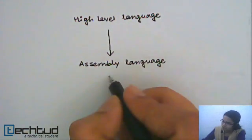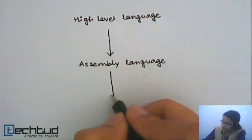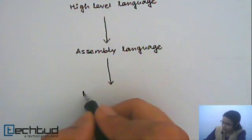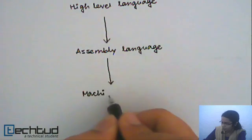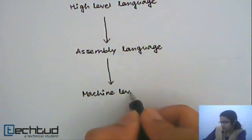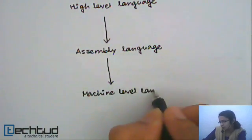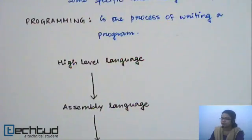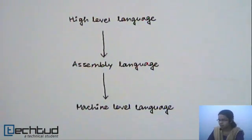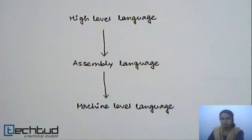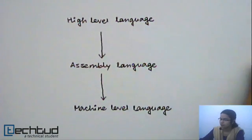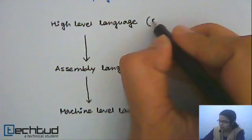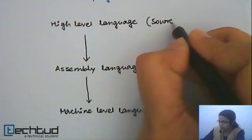Next, this assembly language code is transformed into a machine-level language code. When we write our program in a high-level language, we call it source code.